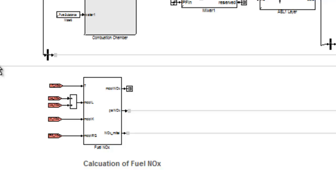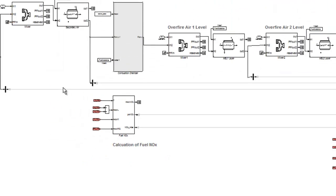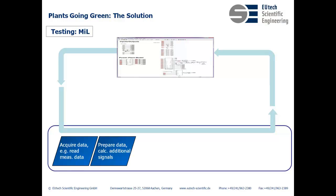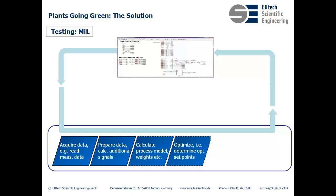Now let's go back and see how we use this model to test our optimizer. At the simplest level, we have the process model and we have the controller. The controller is actually composed of several components. It first acquires the data from the model, which we prepare by filtering, removing false measurements and calculating additional signals if any. We then calculate the process model on which we will base our predictions. Using the process model, we optimize and determine the actuator values for the manipulated variables that will lead us to the optimal set points.